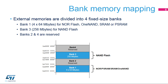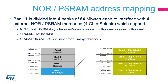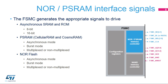Banks 2 and 4 are reserved. Bank 1 is used to address up to four NOR Flash memories or PSRAM devices. This bank is split into four NOR or PSRAM sub-banks of 64 MB each with four dedicated chip selects to interface with 8- or 16-bit synchronous or asynchronous NOR Flash in multiplexed or non-multiplexed mode, 8- or 16-bit asynchronous SRAM and ROM, and 8- or 16-bit synchronous or asynchronous PSRAM memories.